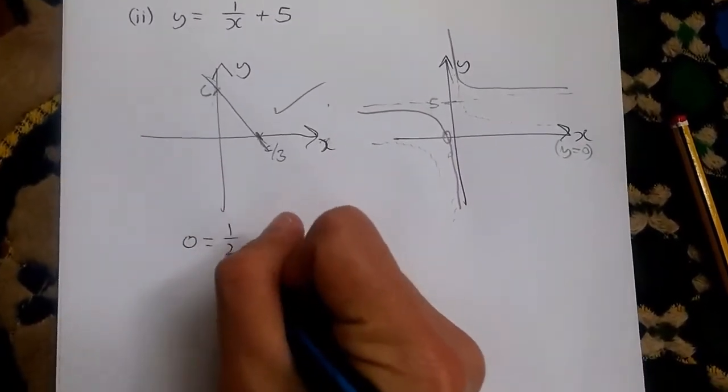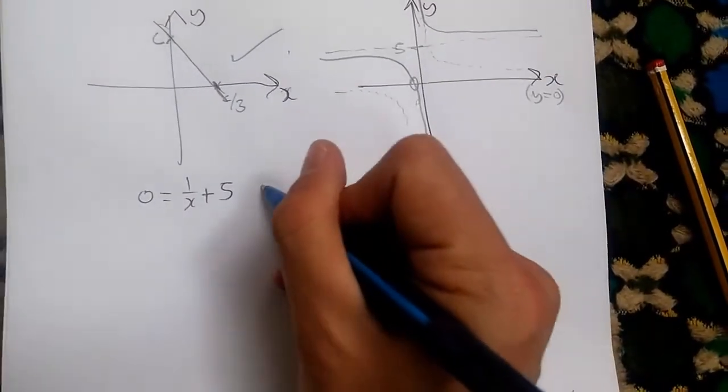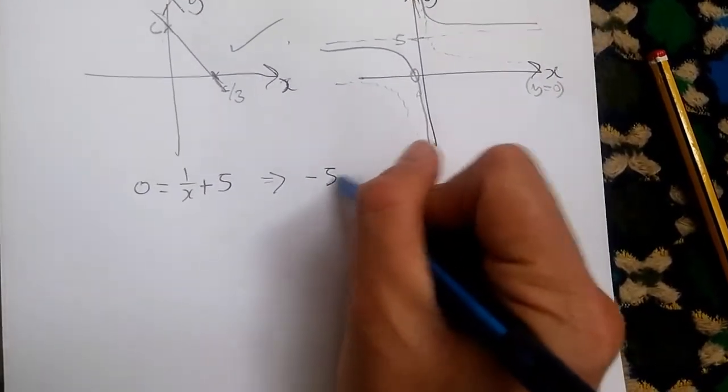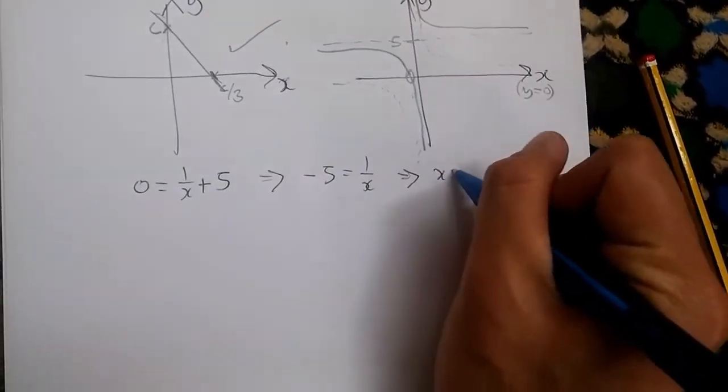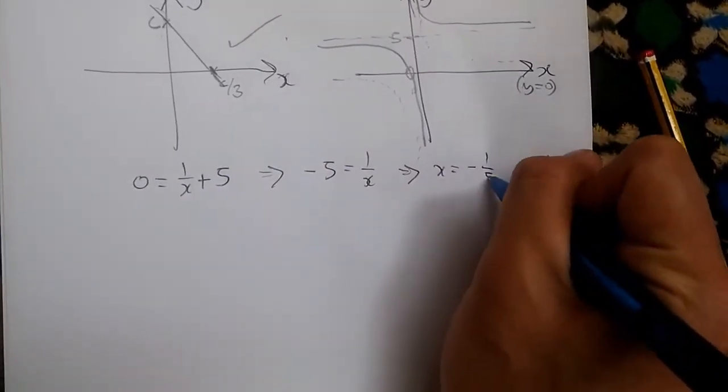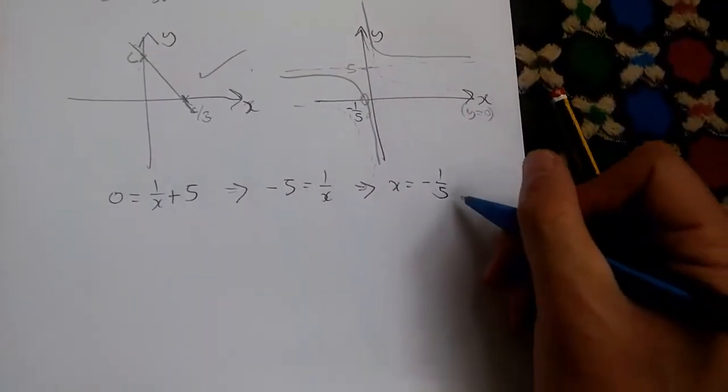Solving this, we can have minus 5 equals 1 over x, taking the reciprocal, and thus x equals minus 1 over 5. So this coordinate here is minus 1 over 5. And that's it.